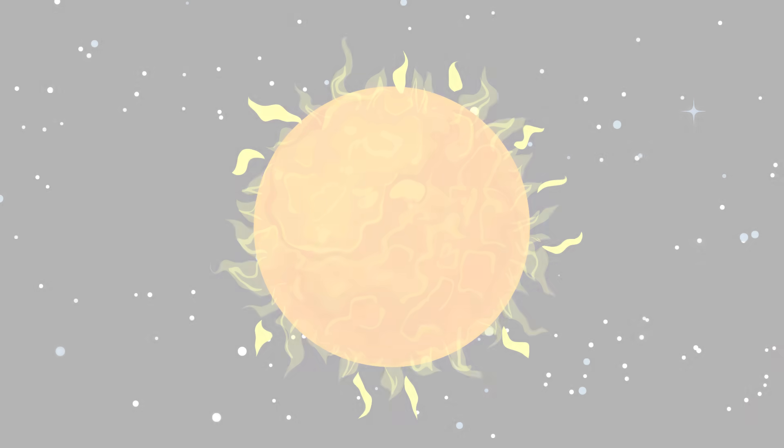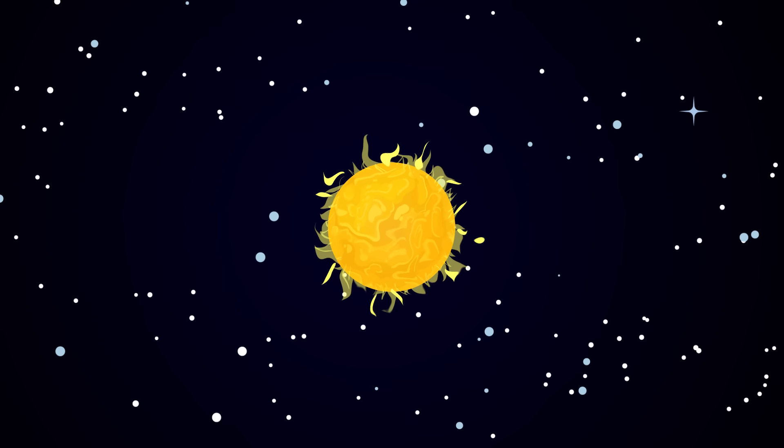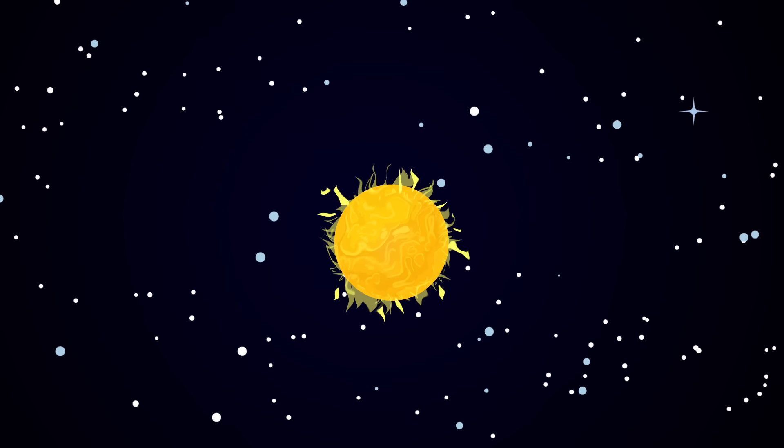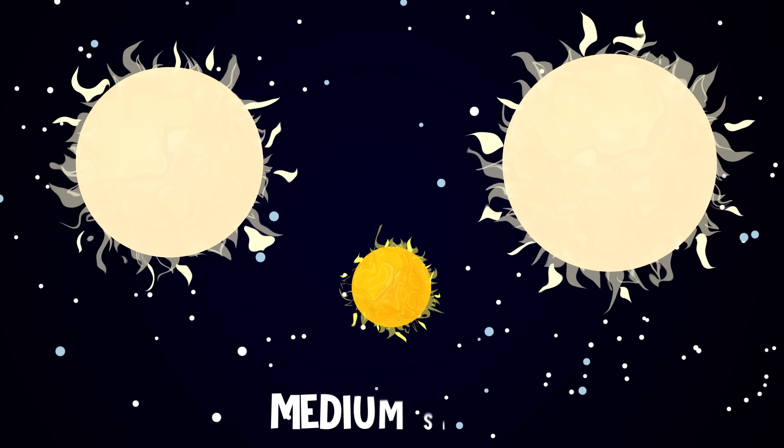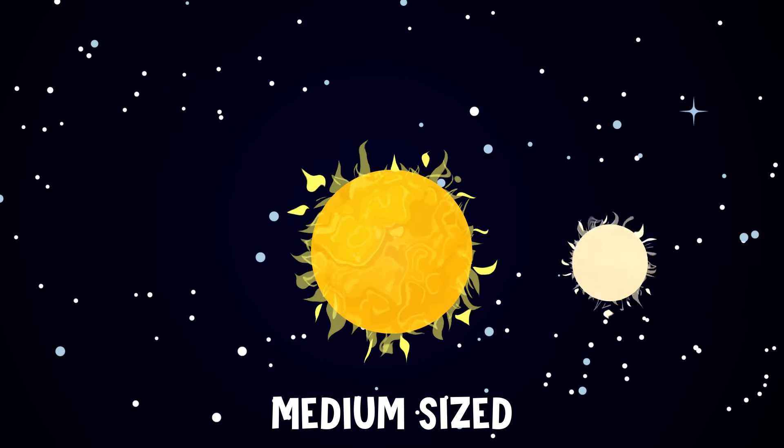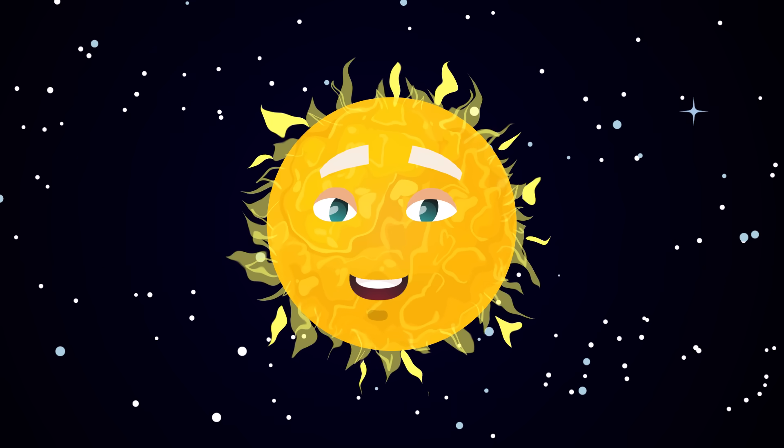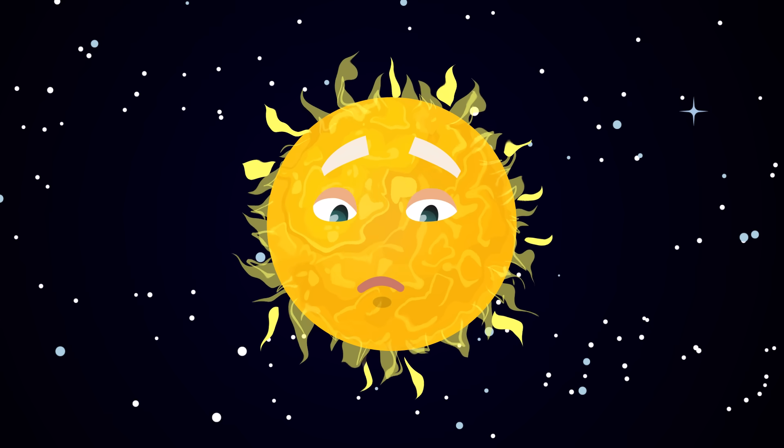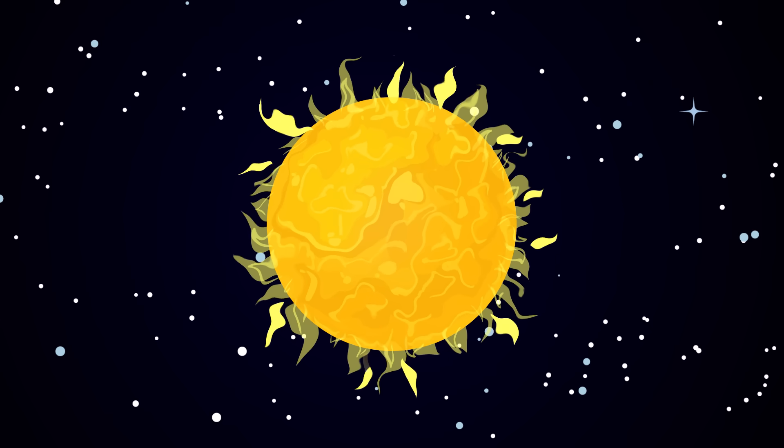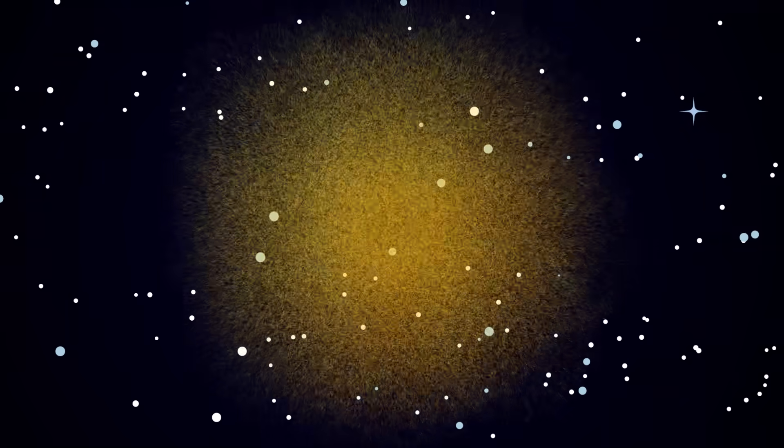But there is good news, too. Our sun is way too small to ever explode. Only really big stars go supernova. And our sun is considered medium-sized, so that's nice. Sadly, there's more bad news. Our sun may never be a supernova, but that doesn't mean it won't have a destructive death.